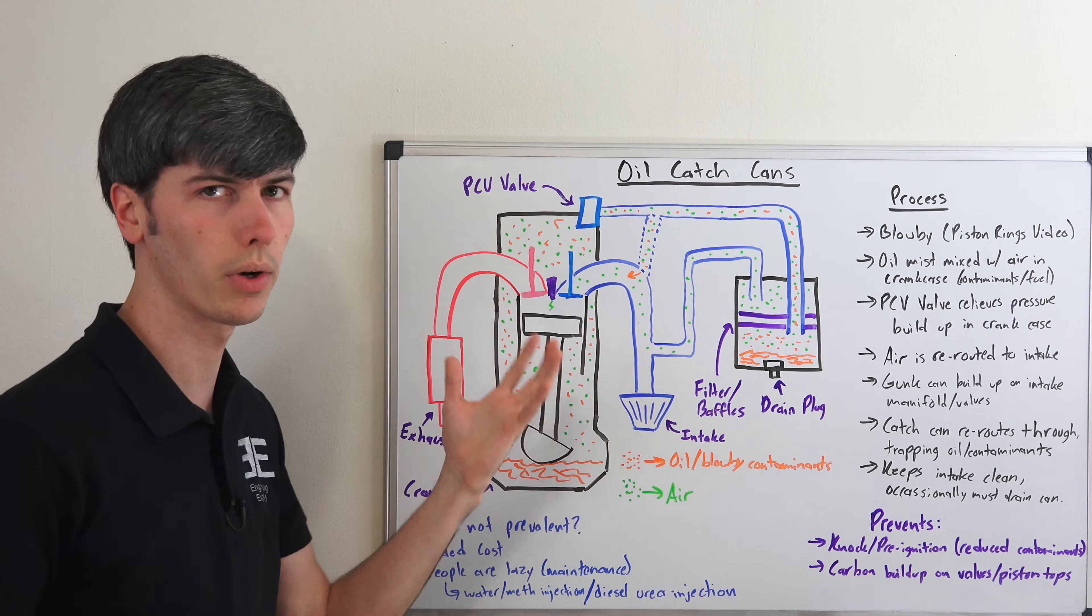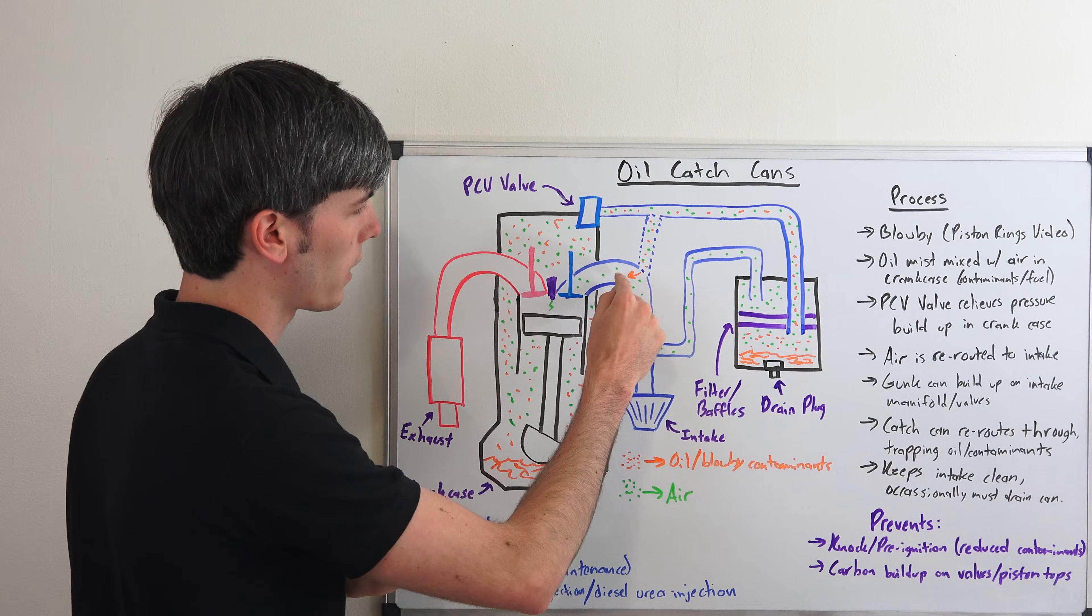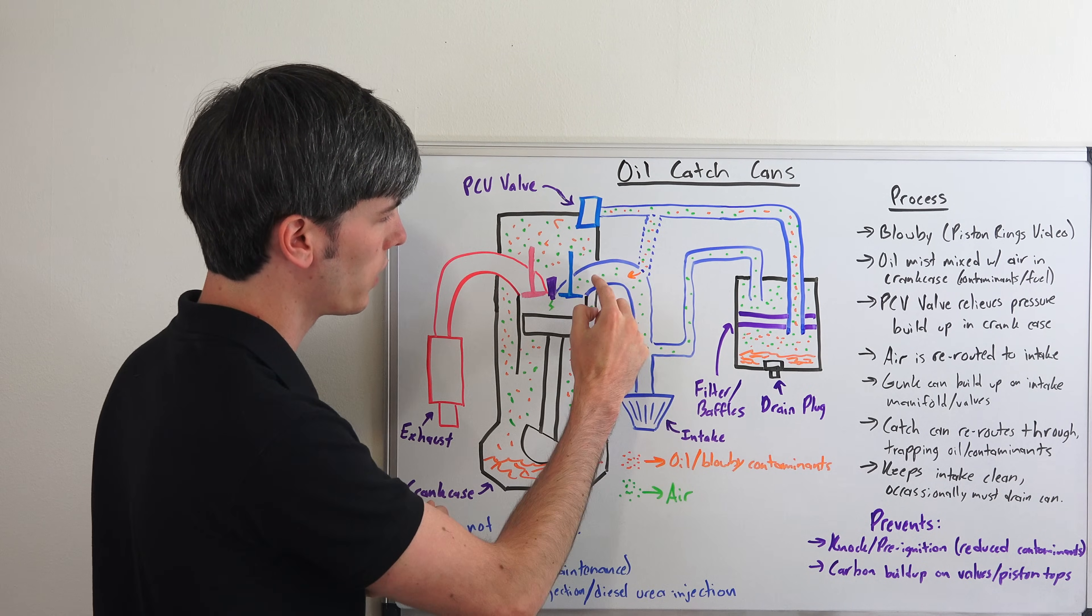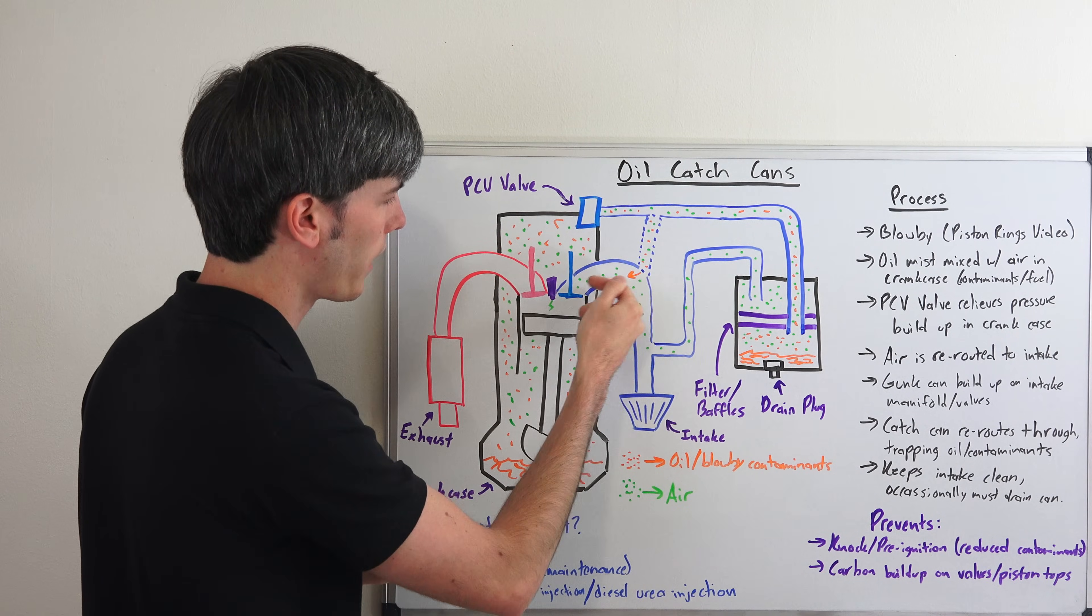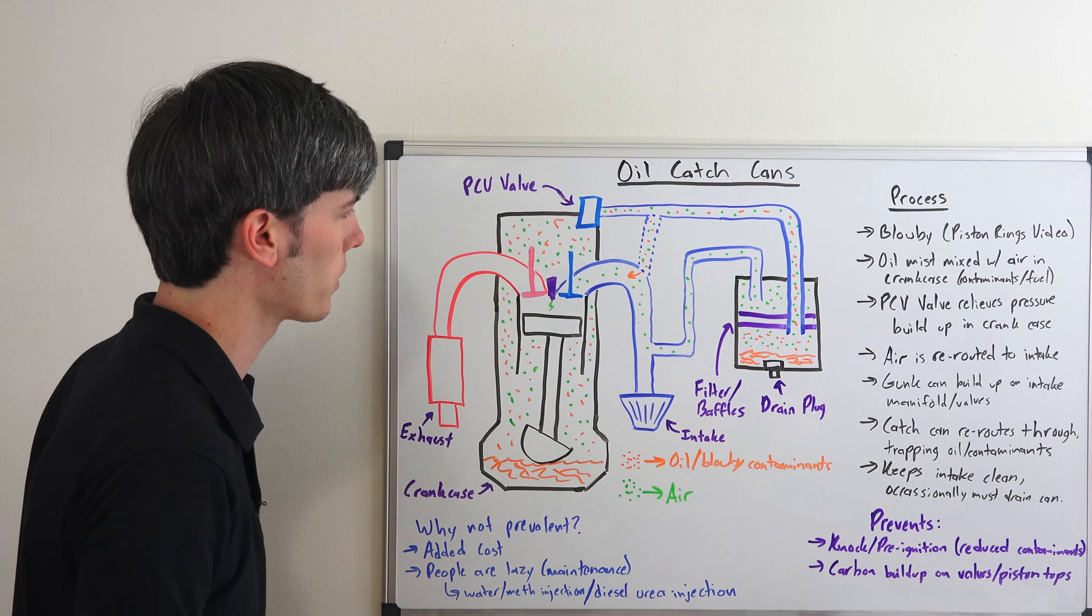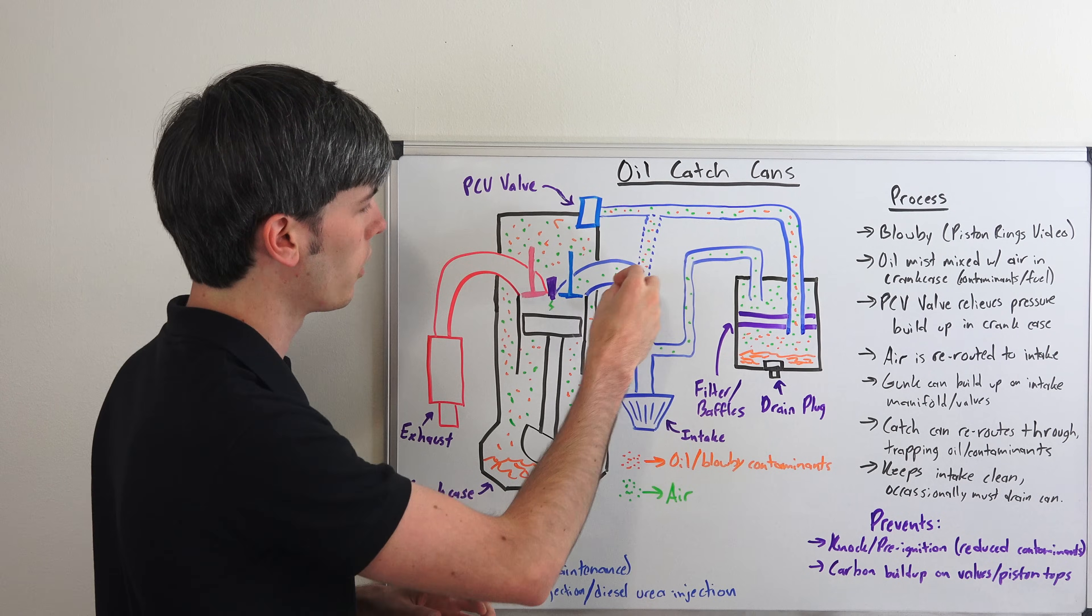Traditionally what you'll do is you'll reroute that back to your intake. So you're drawing in air from your intake. This is pulling a vacuum, this is going to be at a higher pressure, so it's going to draw that in and put it back into your combustion chamber. Well that means you're taking that oil mist and you're putting it on your intake valves.